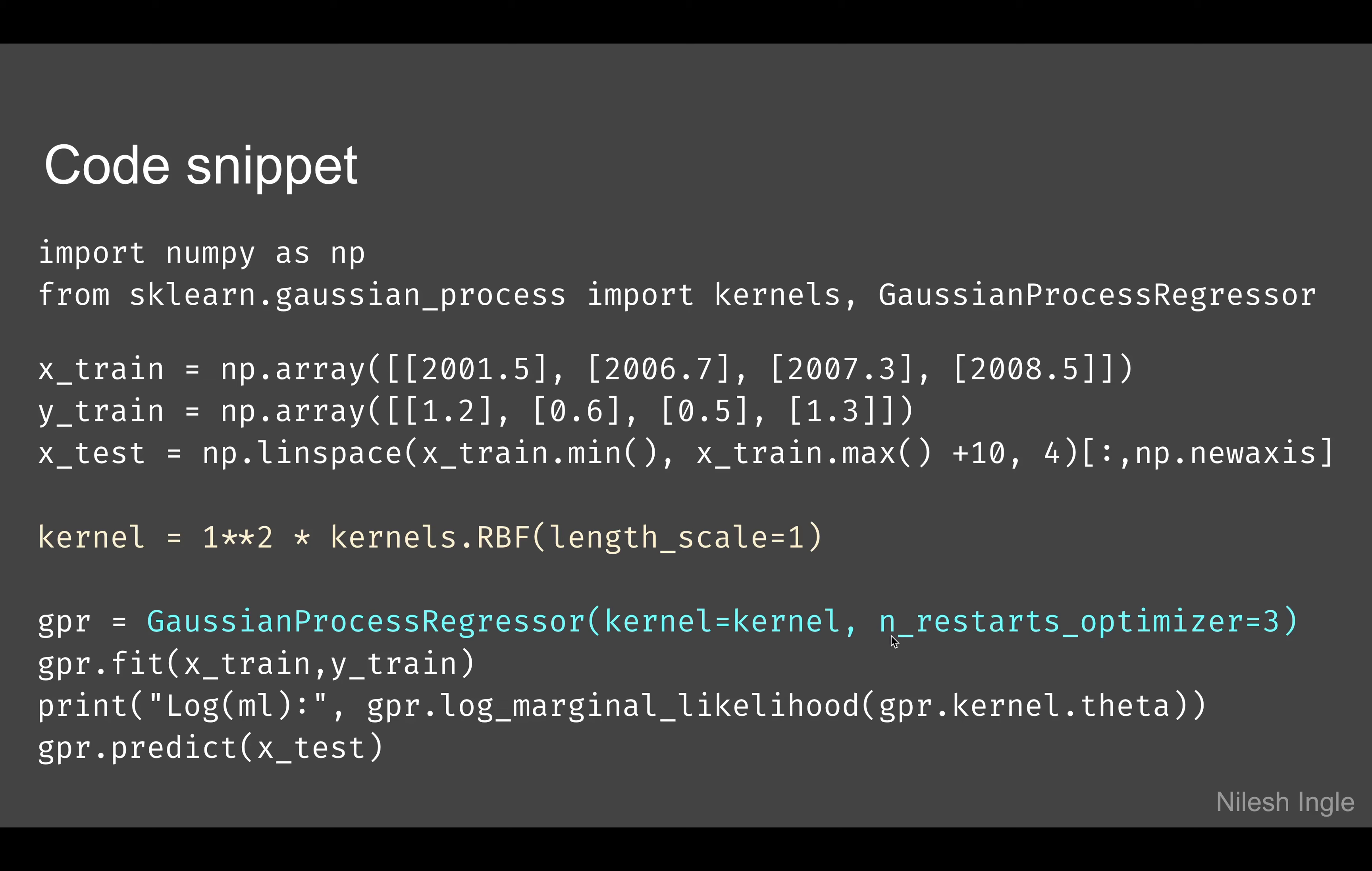For optimizing the parameters of the kernel, there is a provision which is n_restarts_optimizer. Here I've mentioned three, so this value can be changed to allow the Gaussian process regressor to find the optimal values for the kernels that are used in that model. After that you can perform the fit and look at the value for log marginal likelihood to see how the fit is, and then use that to predict on the test set.